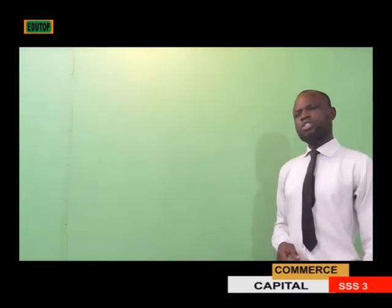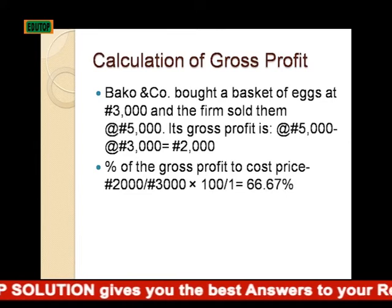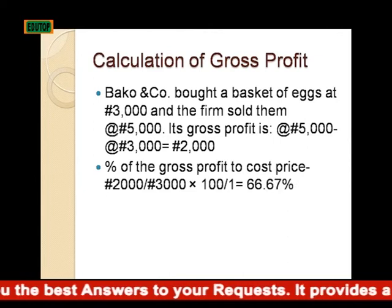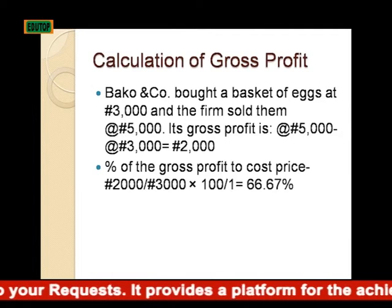Let's look at some calculations of gross profit. Example: Banko and Co. bought a basket of eggs at 3,000 euros and the firm sold them at 5,000 euros. What is its gross profit? Gross profit equals selling price minus cost price: 5,000 euros minus 3,000 euros. Therefore, the gross profit is 2,000 euros.